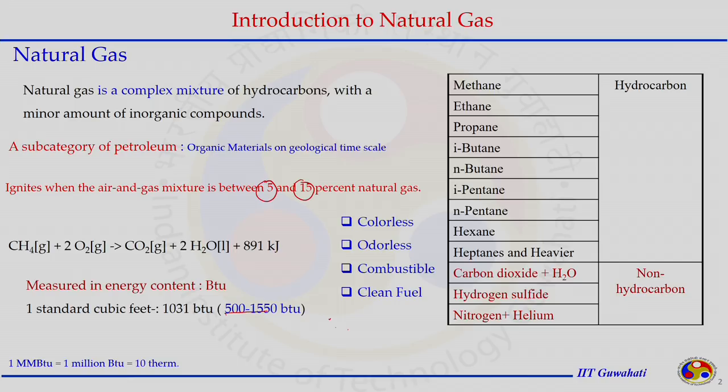Natural gas is colorless, odorless, combustible, and a clean fuel. Because it is odorless, mercaptans such as thiols are added to natural gas to detect its leakage or presence.